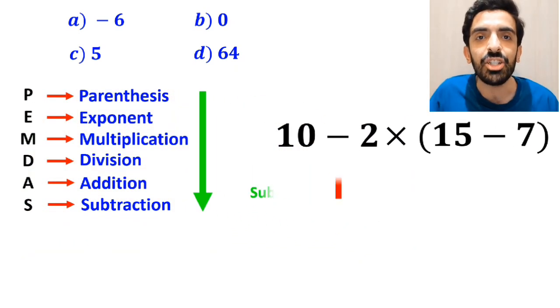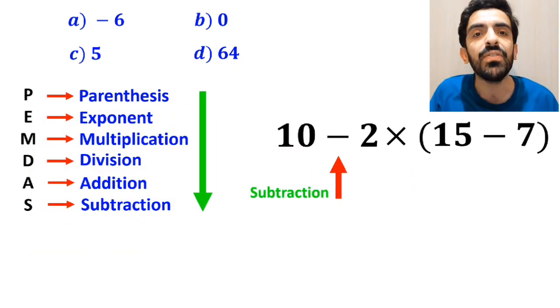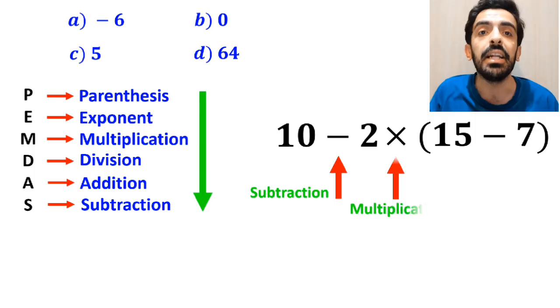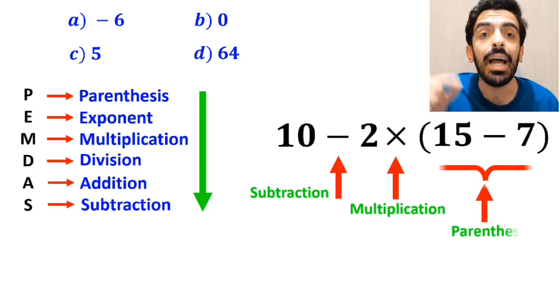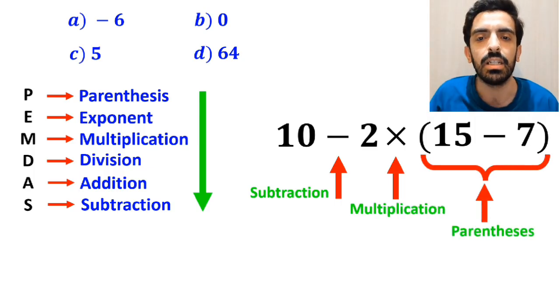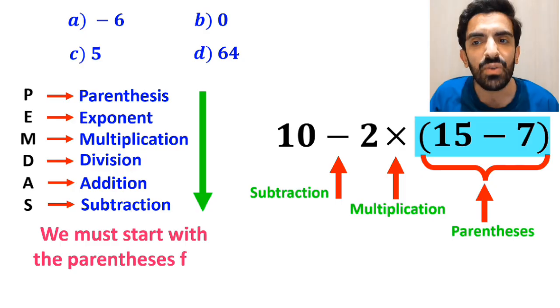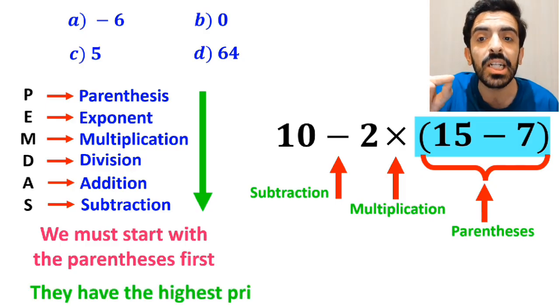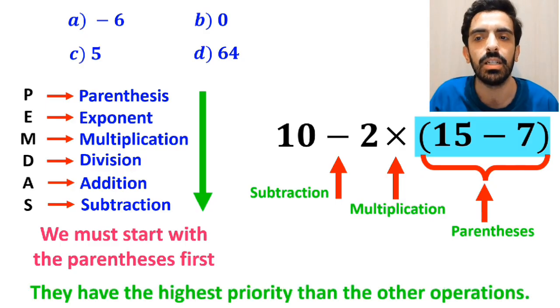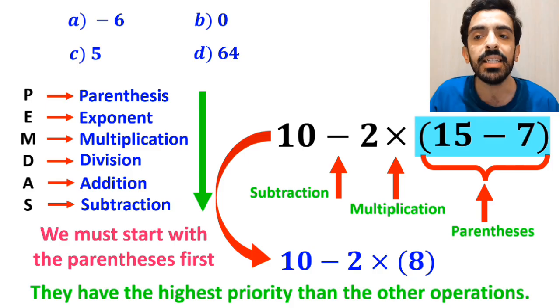As you can see in the image, in this expression, first we have a subtraction sign, then a multiplication sign, and finally parenthesis. We must start with the parenthesis first, because they have the highest priority. So, we can rewrite this expression as 10 minus 2, then times 8.